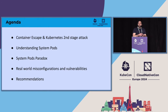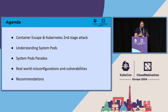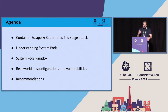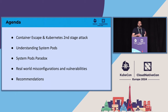Our line-up topics for today: we'll start by talking about container escape and Kubernetes second-stage attack, and explore why they are so critical for cloud security. Then we'll try to understand system pods — their function and privileges — followed by the system pods paradox: privilege against risk and the unique security challenges around it. Moving on to real-world misconfiguration and vulnerability, we'll examine a real-world case study combining two default misconfigurations in GKE. And then we'll wrap it all up with some key recommendations and best practices.